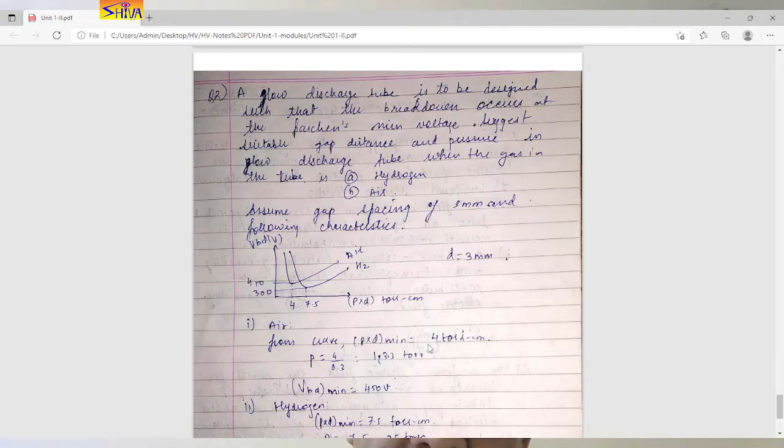From curve, p into d minimum is 4 torr centimeter. Distance is fixed that is 3 mm, that is 0.3 centimeter. So we get the pressure of 13.3 torr.